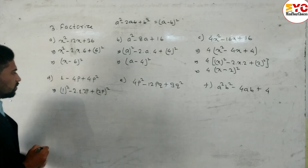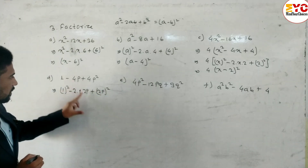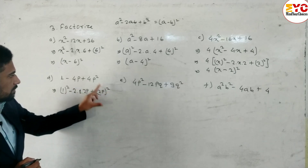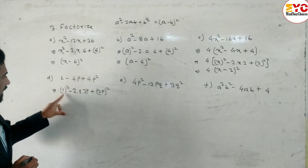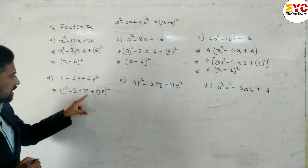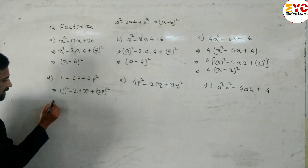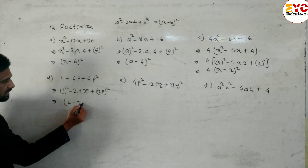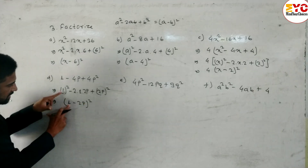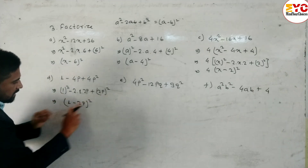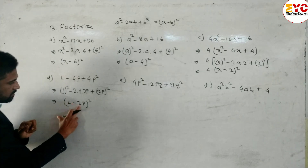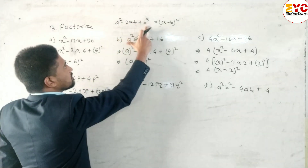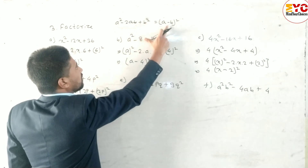So we write 2 × 1 × 2p = 4p, and (2p)² = 4p². This is in the form a² - 2ab + b², the formula of (a - b)². Therefore we write (1 - 2p)², where a = 1 and b = 2p. Don't forget this formula: a² - 2ab + b² = (a - b)².